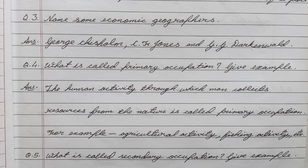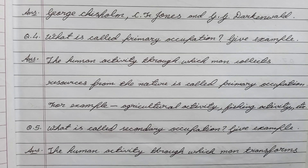Question number four: What is called primary occupation? Give an example. Answer: The human activity through which man collects resources from nature is called primary occupation. For example, agricultural activity, fishing activity, etc.